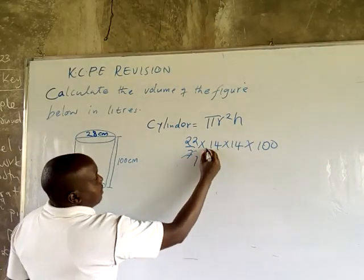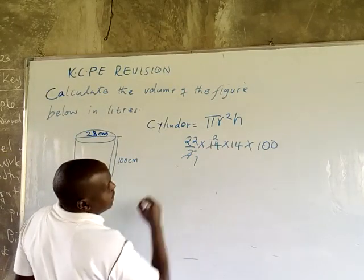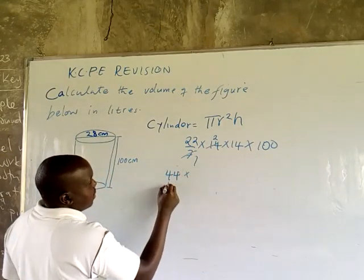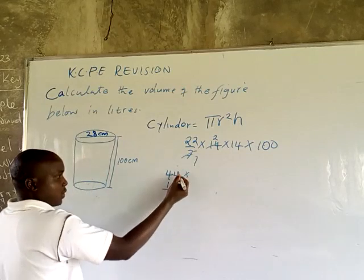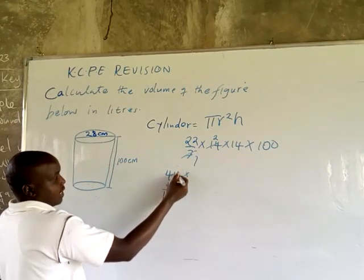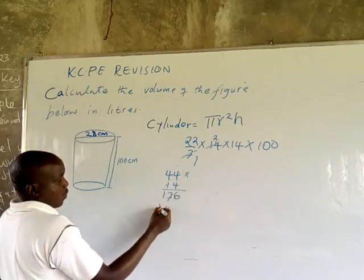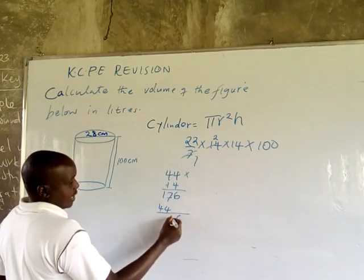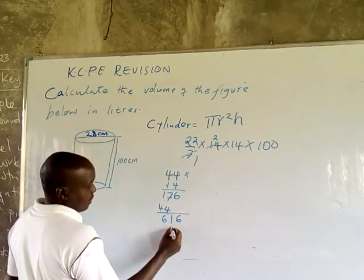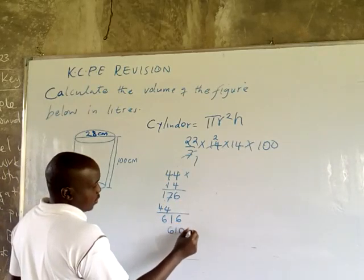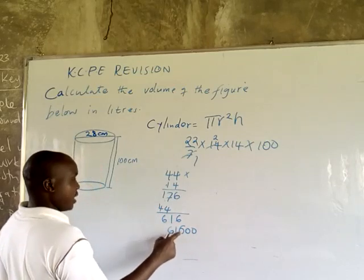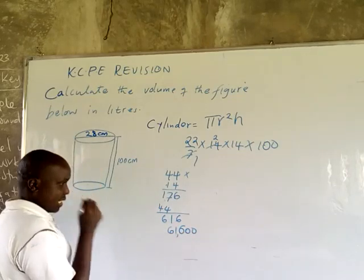The 7 cancels once, leaving 22 times 2, which gives 44 times 14. 44 times 14 equals 616. Then times 100 gives us 61,600.